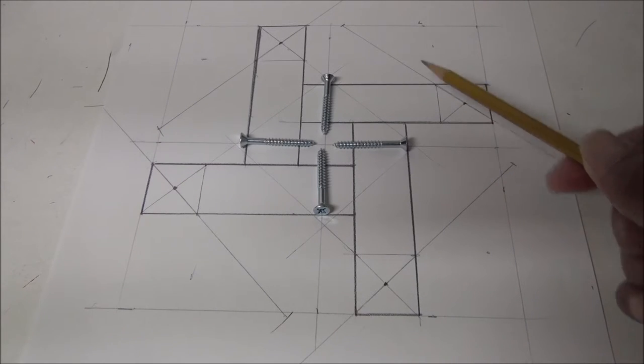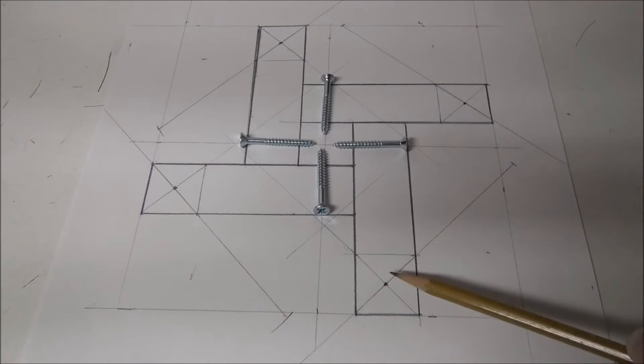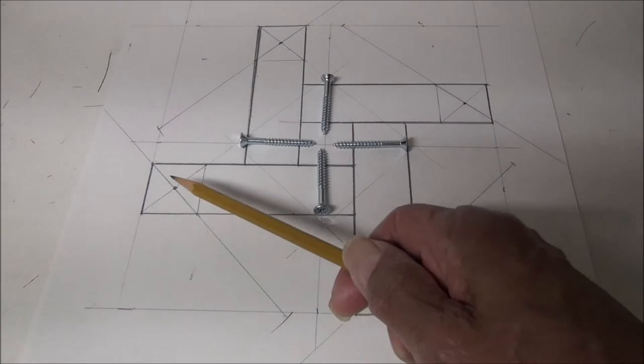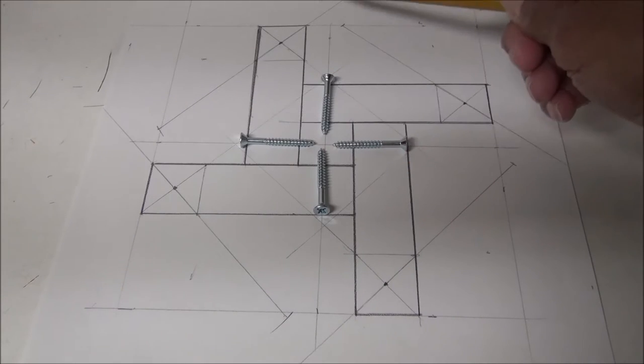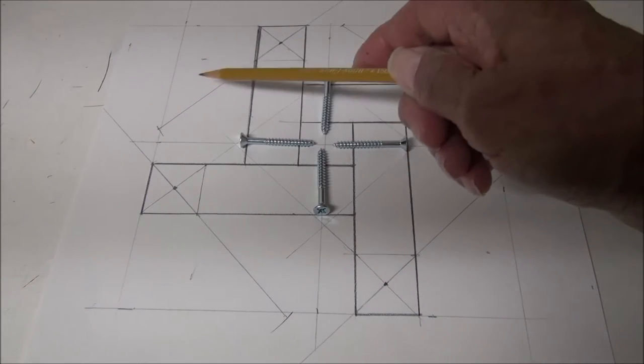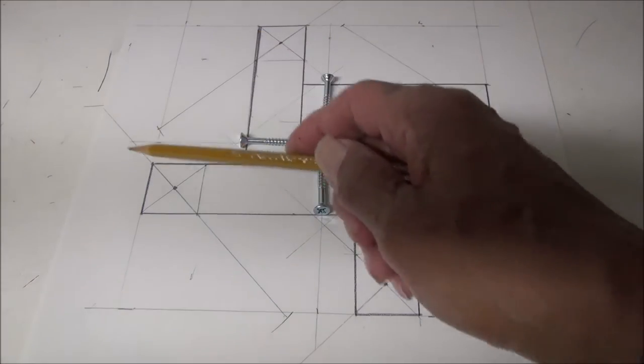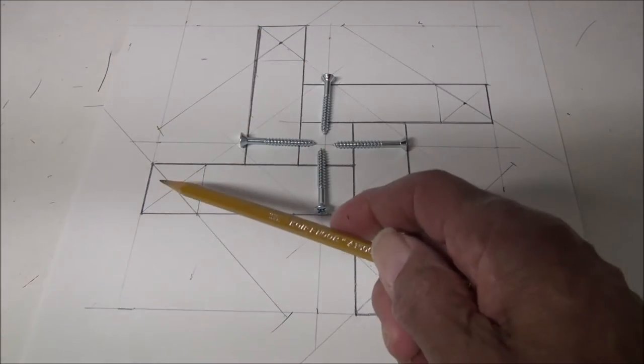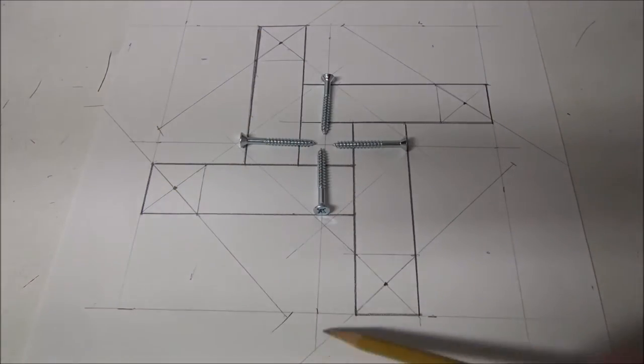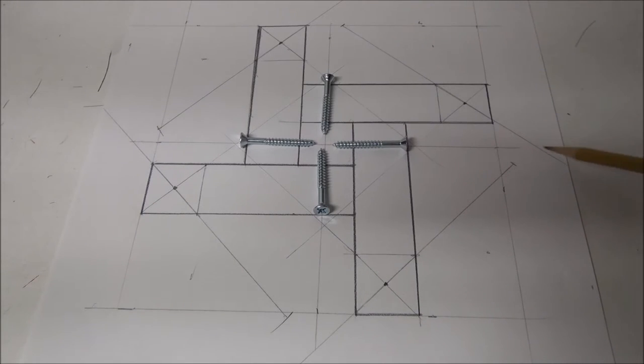These dots represent the post of each pinwheel. These lines here are the blades of the pinwheel and the pinwheel is facing out away from the structure. This is a pinwheel facing this way, this is another pinwheel facing this way, and this is a fourth pinwheel facing out this way.